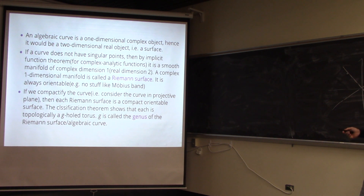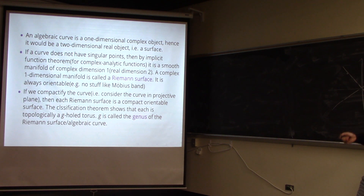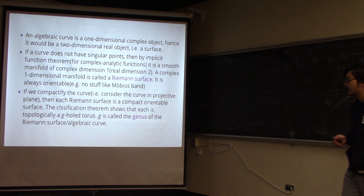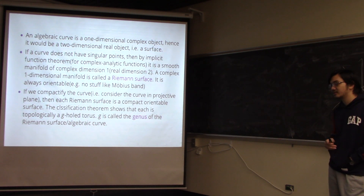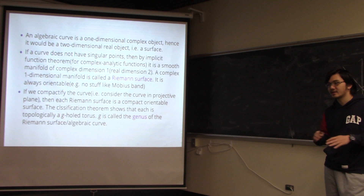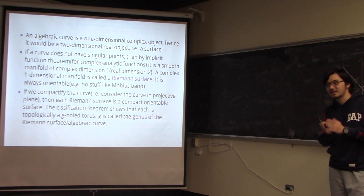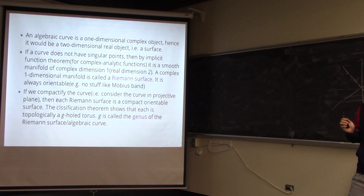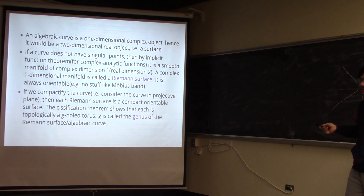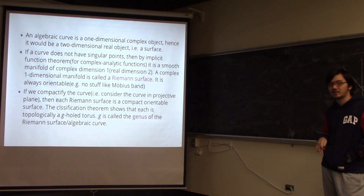One important difference between a general surface and a Riemann surface is that a complex manifold is always orientable. In the real case, you have the Möbius band, which is a surface that is not orientable — there's no inside and outside. But that doesn't happen with Riemann surfaces or complex manifolds.